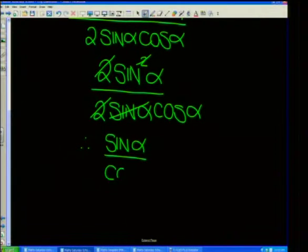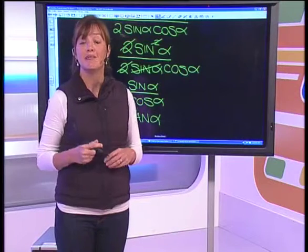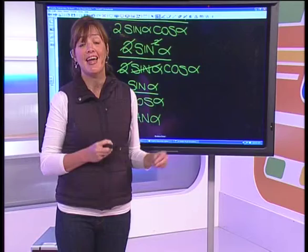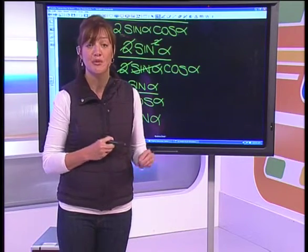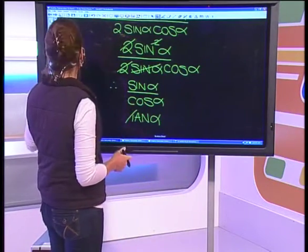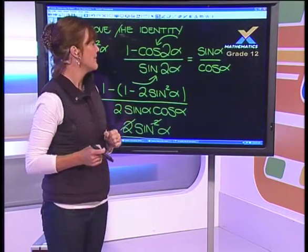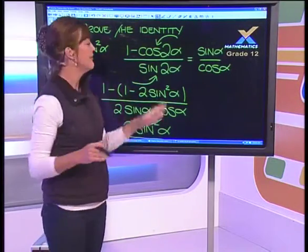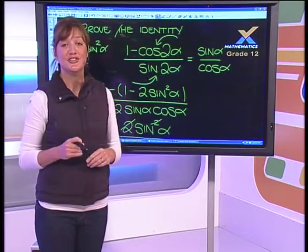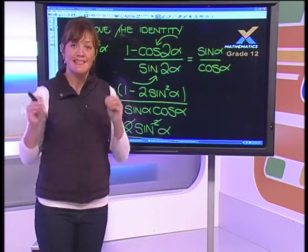We're left with sinα over cosα, which equals tanα — and that is exactly what we were asked to prove. So we have successfully proved that 1 minus cos2α over sin2α equals tanα.